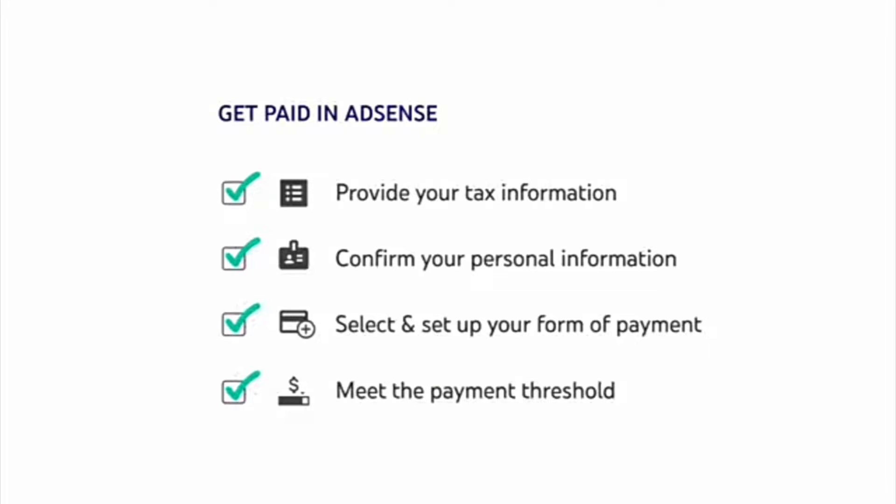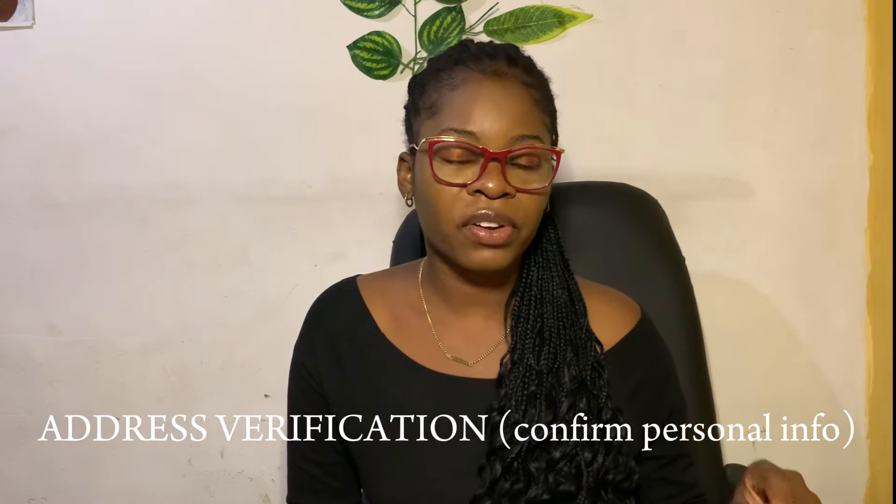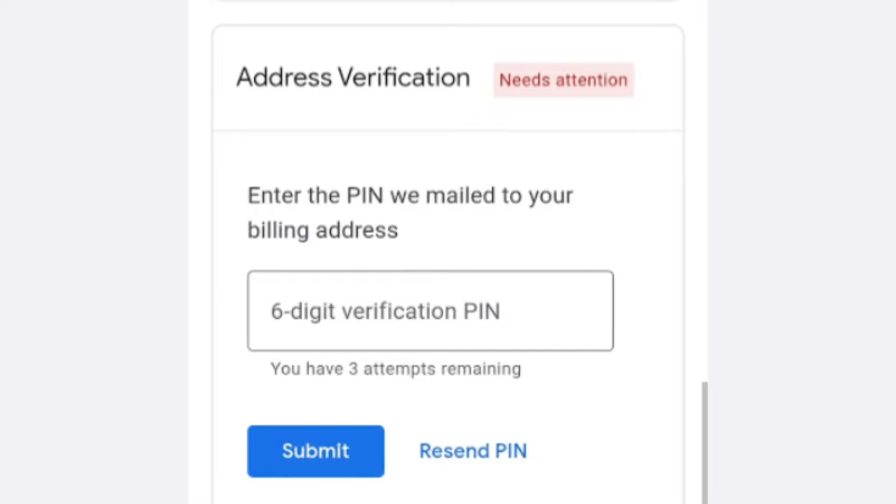After you've applied to become a YouTube partner, there are some things required of you — some necessary information YouTube has to get from you before they can pay money into your bank account. The money is being accumulated in your channel, but before they can pay it directly to your bank account, there are some requirements they have to get from you, one of which is address verification. During the process of address verification, you insert your address and Google AdSense sends a PIN to that address.